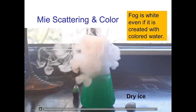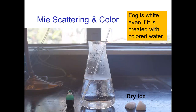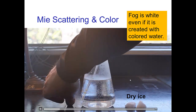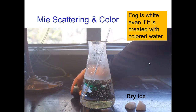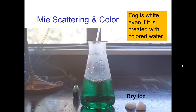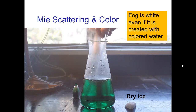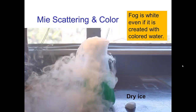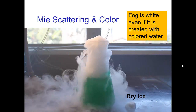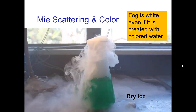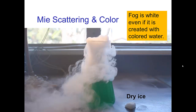Let's see an example of this. I have some warm water here — you can see a little bit of steam coming out — and we're going to dye it green. Then I'm going to put a chunk of dry ice into the water to create some fog. So we're going to see water vapor, just tiny water droplets bubbling out. And even though the water is tinted green, you see that the fog is white, because what you're seeing is the scattering of light by these tiny droplets.